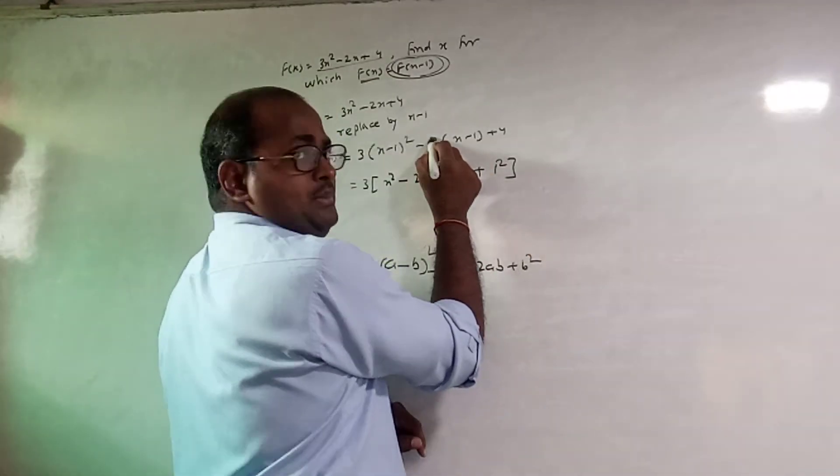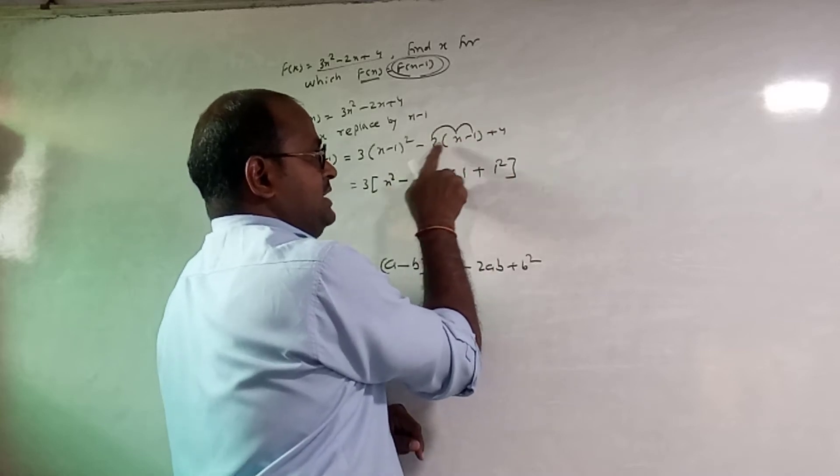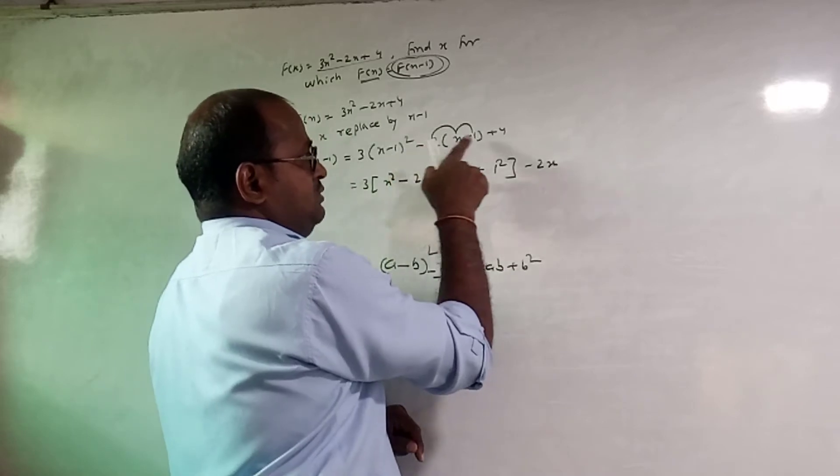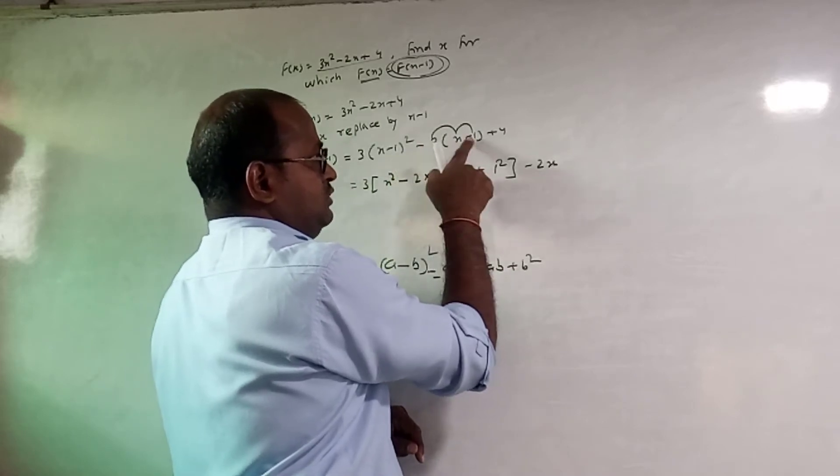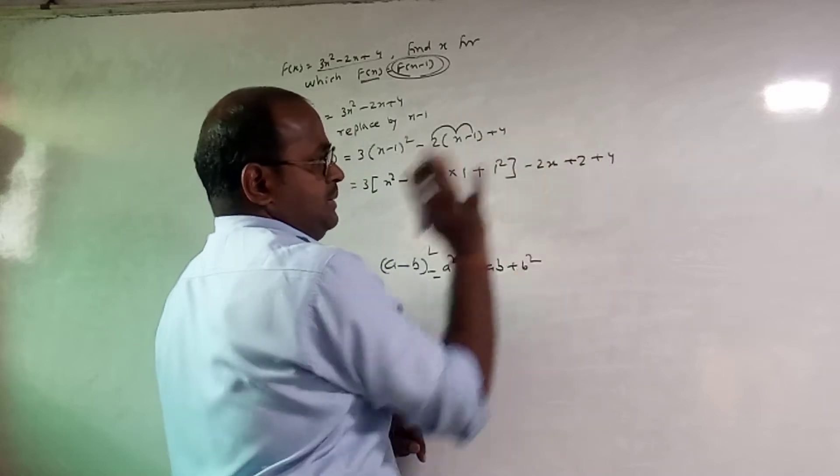Minus 2, multiply this. Minus 2 into x minus 2 into x, minus 2x. Minus 2 into minus 1, minus 2 into minus 1, minus minus plus 2.